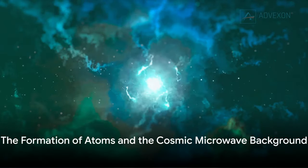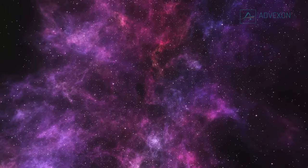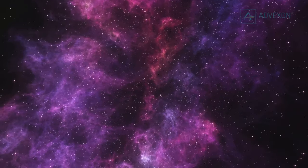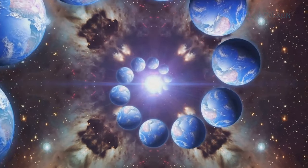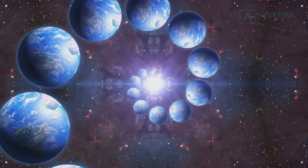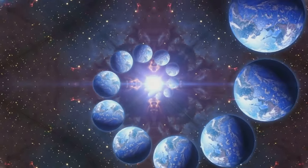The universe didn't form galaxies, stars, and planets right away. It took nearly 400,000 years for the universe to cool down enough for atoms to form and light to escape. This is what we now see as the cosmic microwave background - the oldest light in the universe, a snapshot of the universe when it was just a baby by cosmic standards.